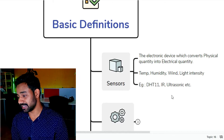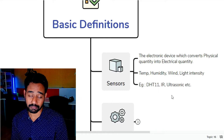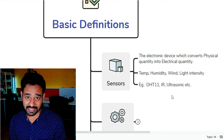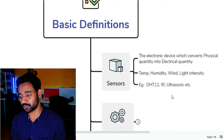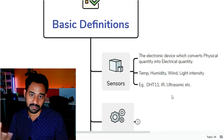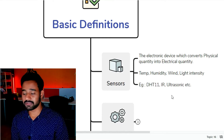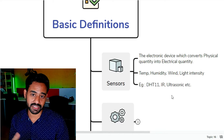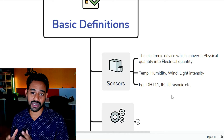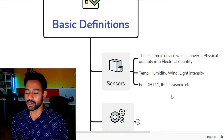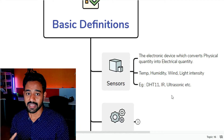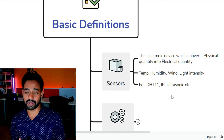Temperature, humidity, wind speed, and light intensity are the major physical quantities we convert on a day-to-day basis to monitor the environment around us. Examples of sensors include the DHT11 sensor, which converts temperature and humidity into electrical signals for monitoring ambient temperature; the IR sensor, which detects motion or objects in front of it through light energy conversion; and the ultrasonic sensor, which uses ultrasonic sound wave principles to measure the distance between the sensor node and an object.